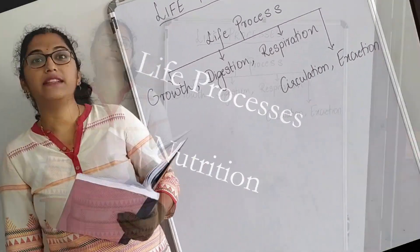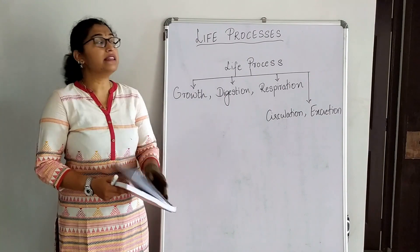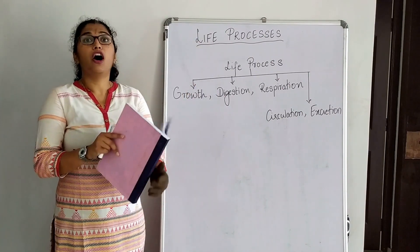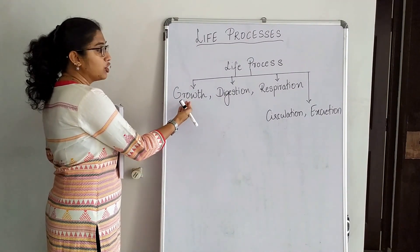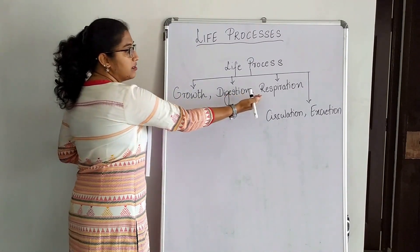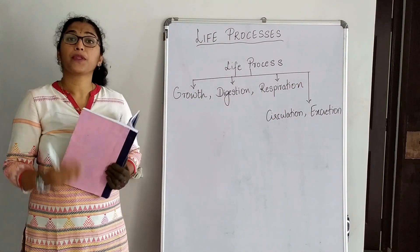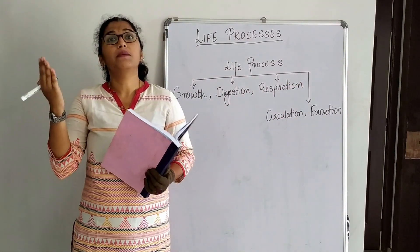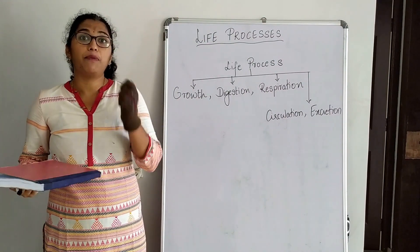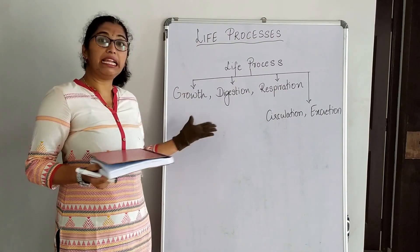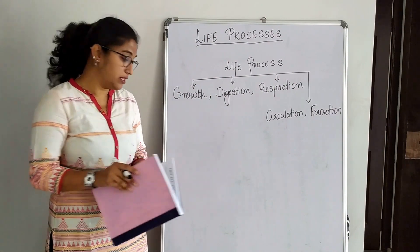Good morning. Today we will start the sixth chapter of life processes. What are life processes? All living organisms perform certain life process activities like growth, digestion, respiration, circulation, excretion, etc. All these activities put together make the living organisms alive and perform the job of maintaining the body. Such a type of process is known as life processes.